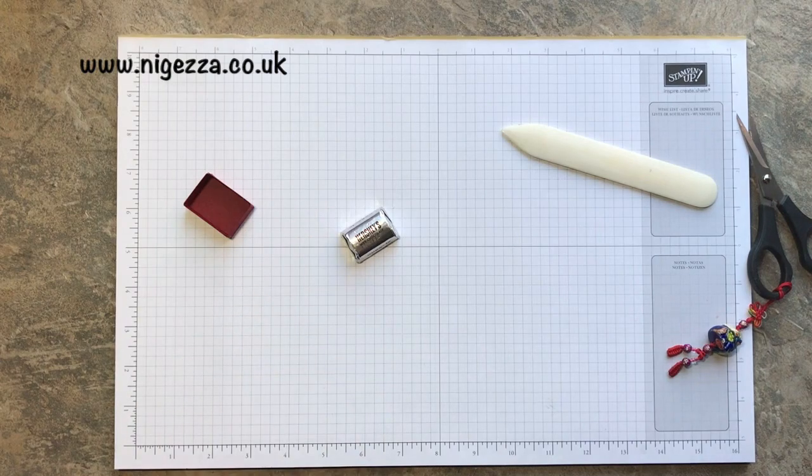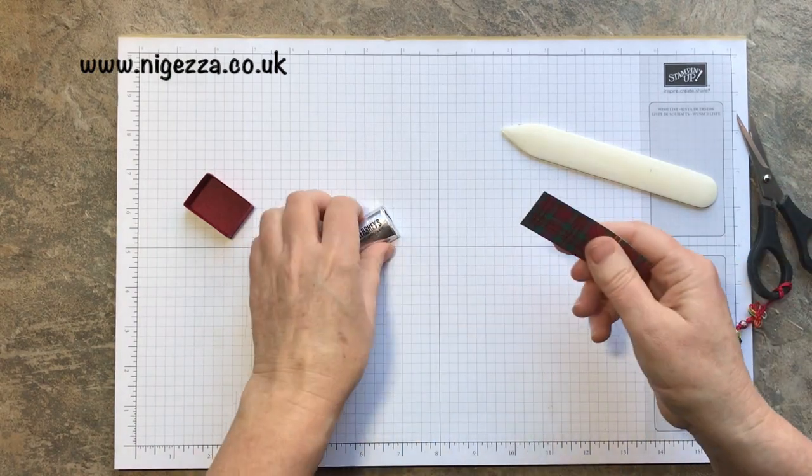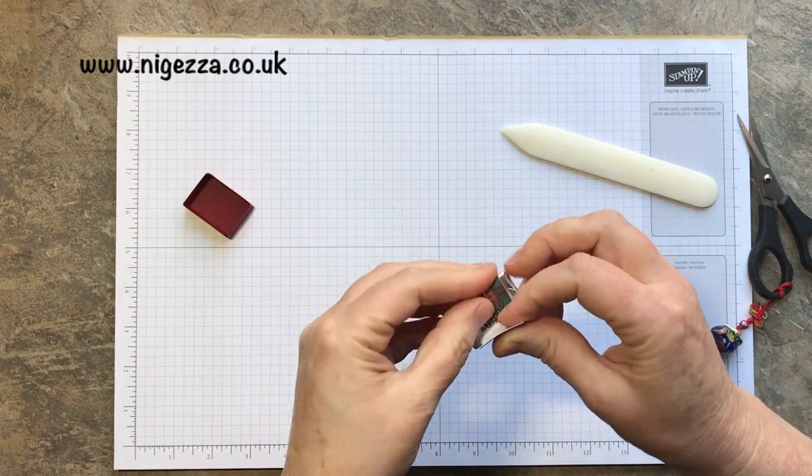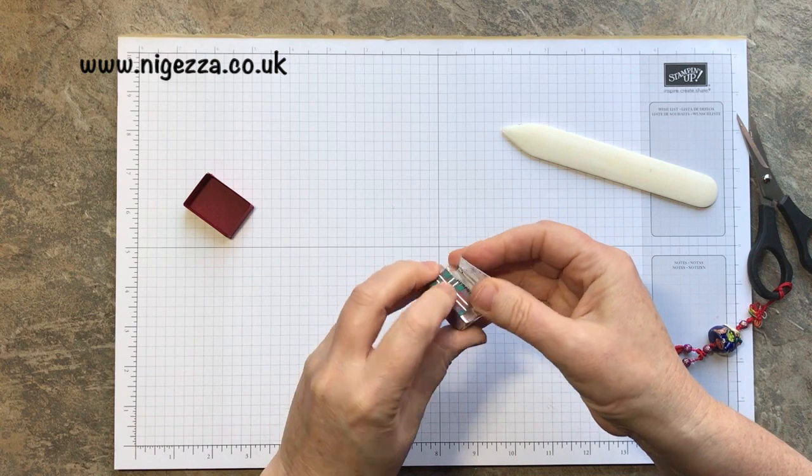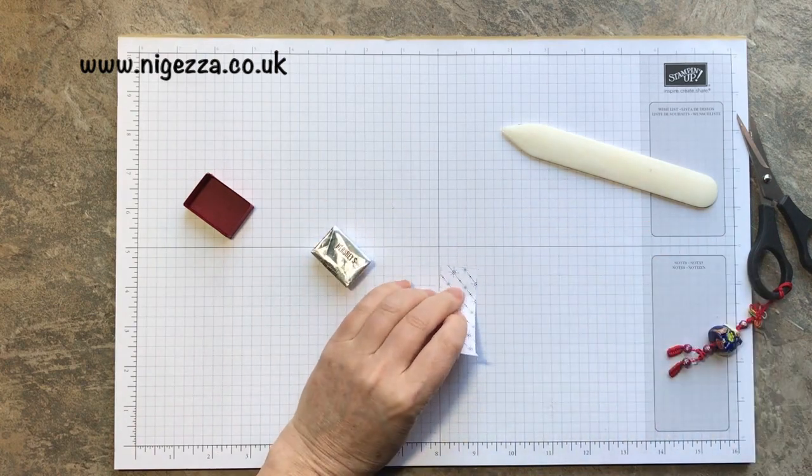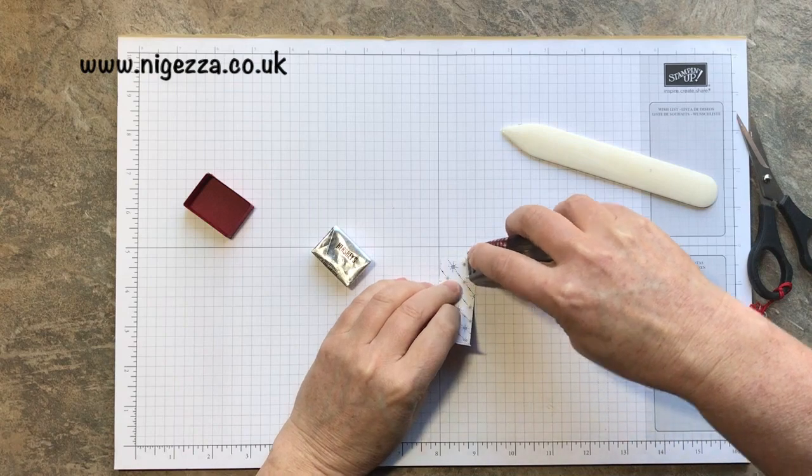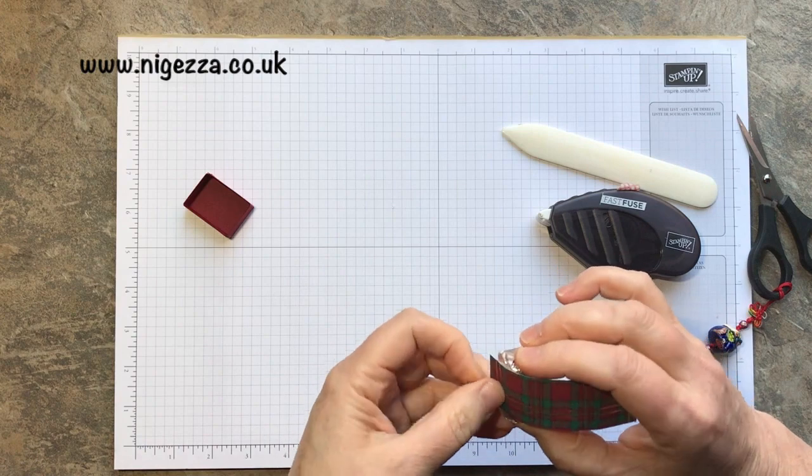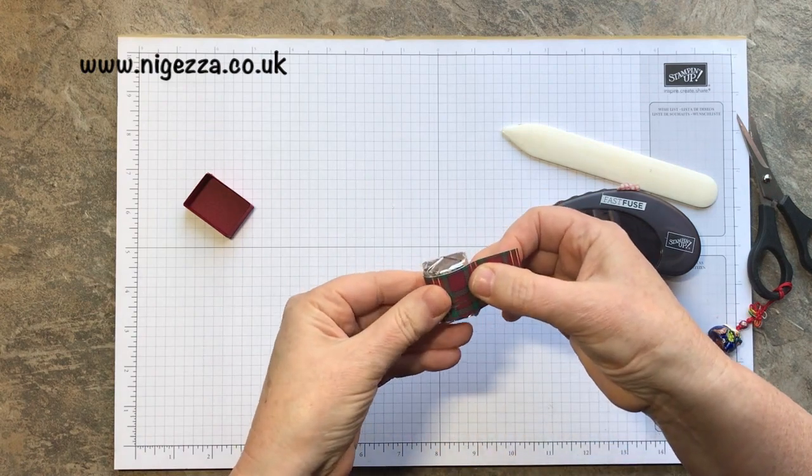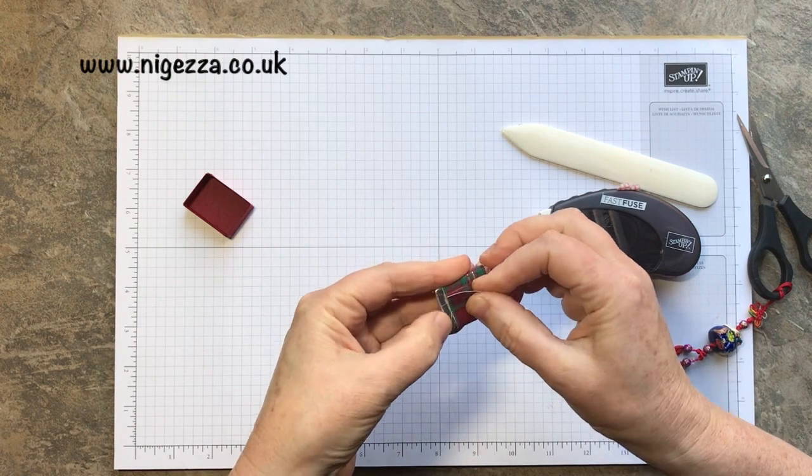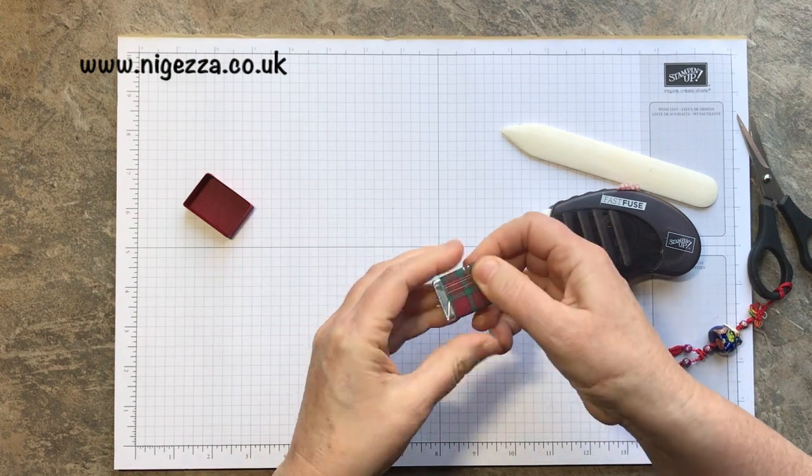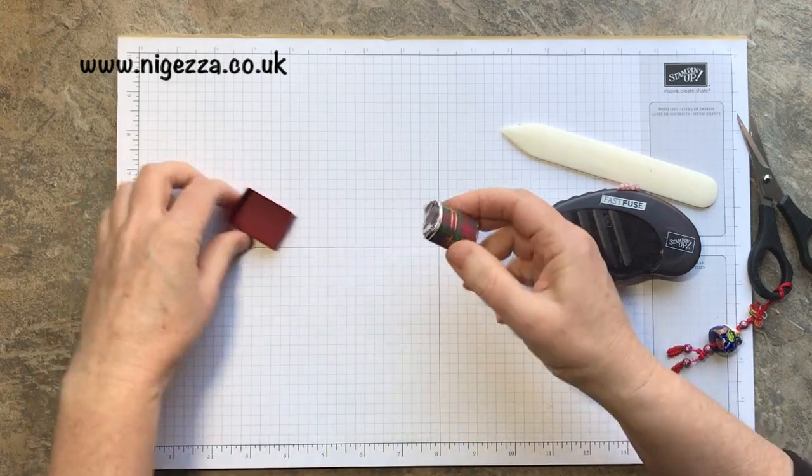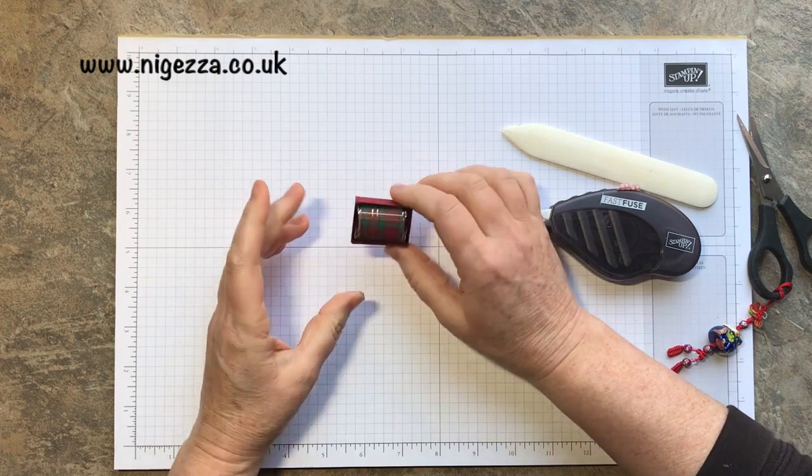Now we need to do the wrap for the nugget. That just wraps around there, so we put a little bit of glue along there. In hindsight, gold would have been nicer than silver, but I'm sure nobody's going to complain on Christmas day.